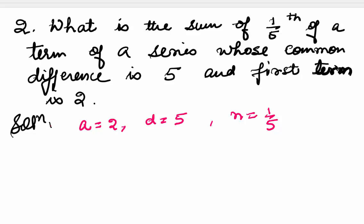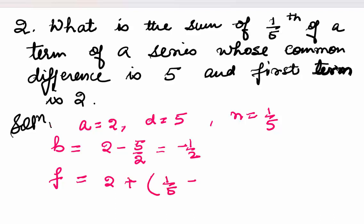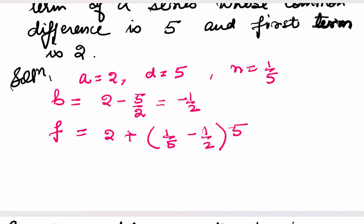Second question: what is the sum of one-fifth of a term of a series whose common difference is 5 and first term is 2? A = 2, D = 5, N = 1/5. B = 2 − 5/2 = −1/2. F = 2 + (1/5 − 1/2) × 5 = 1/2. Since B + F = 0, the sum comes out to be 0.